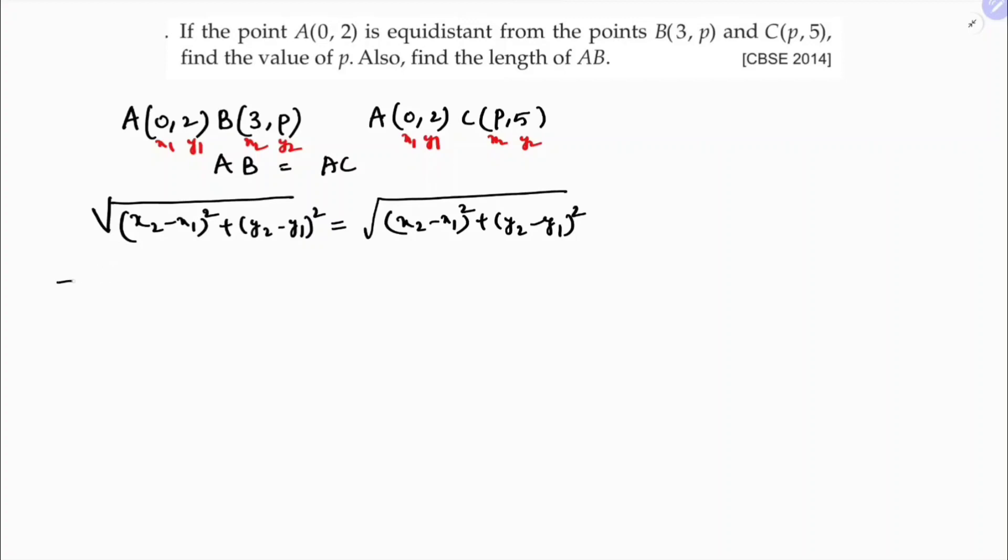Now I will substitute the values. See, under root x2, 3 minus 0 whole square, y2 that is P minus 2 whole square.